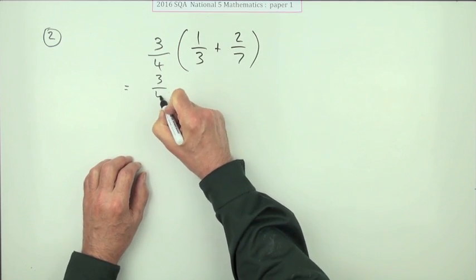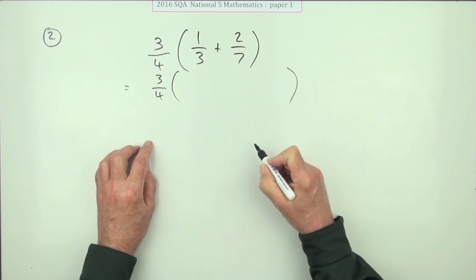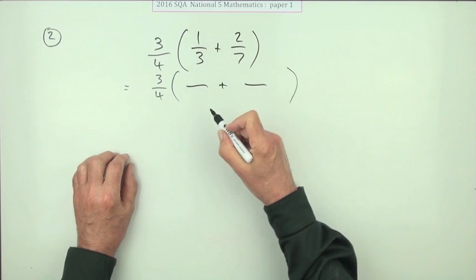So the three quarters will just have to wait. I'll just keep that in a bracket for now. Depends how you write your fractions - I normally put them into one but you might have them separate, so I'll just keep them separate just now.